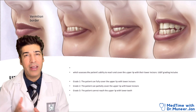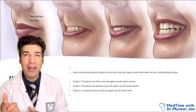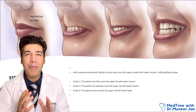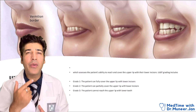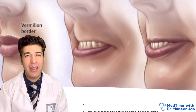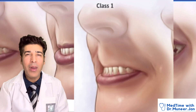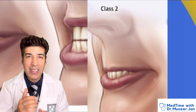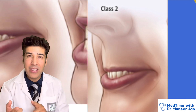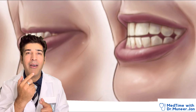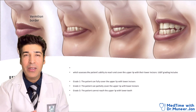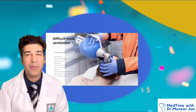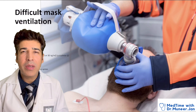The upper lip bite test is very important for predicting difficult video laryngoscopy. Assess the patient's ability to reach and cover the upper lip with the lower incisors. Class 1: the patient can fully cover the upper lip. Class 2: the patient only partially covers the upper lip, as seen in the figure. Class 3: the patient is unable to reach the upper lip. Class 2 and Class 3 indicate high possibility of difficult direct laryngoscopy and video laryngoscopy.